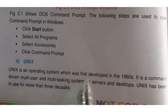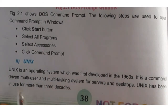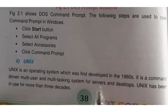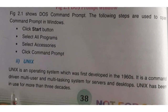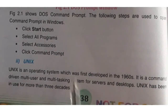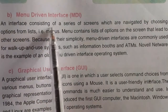UNIX operating system is also a command line interface. It was first developed in the 1960s. It is a command-driven, multi-user and multitasking system for servers and desktops. Multi-user means more than one user can use the UNIX operating system, and multitasking means more than one task can be performed.